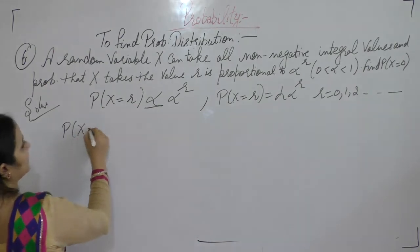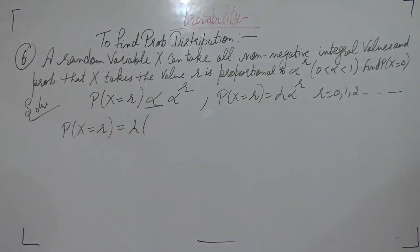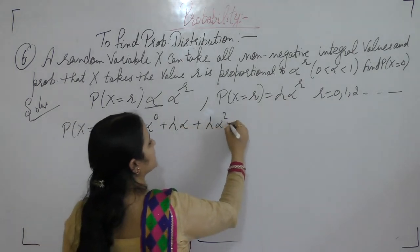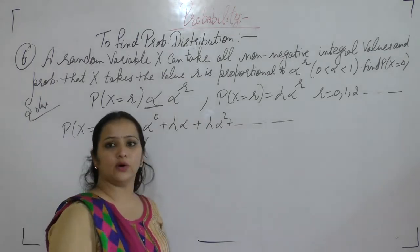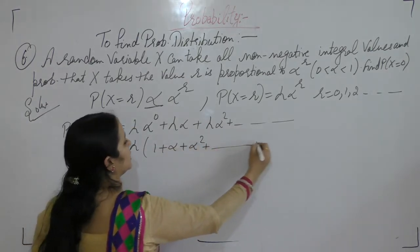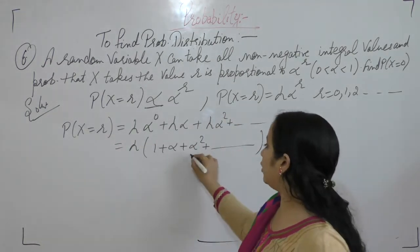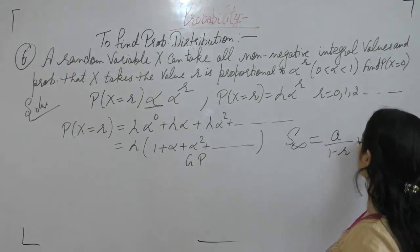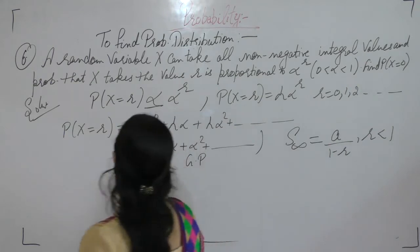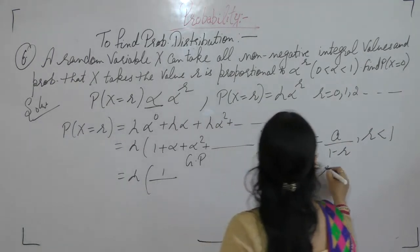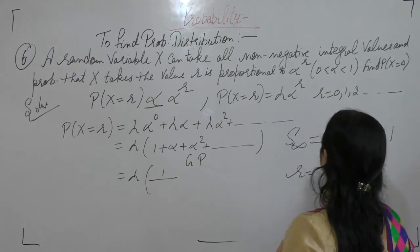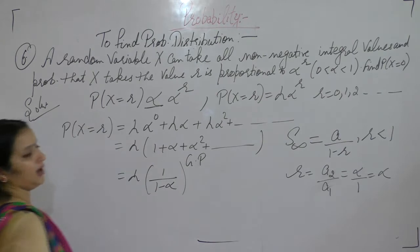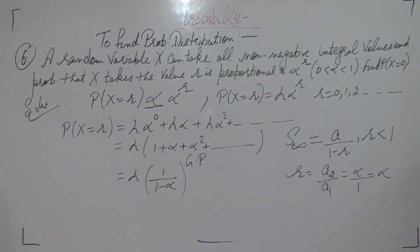Now put the values: X equals R, lambda is constant. Put the value of R: lambda times (alpha^0 plus alpha^1 plus alpha^2 and so on). Since something to the power 0 is 1, this becomes lambda times (1 plus alpha plus alpha squared and so on). This is a GP of infinite terms. Sum of infinite GP is A upon (1 minus R) when R is less than 1. Here A is 1 and common ratio is alpha upon 1, which is alpha. So sum is lambda upon (1 minus alpha).